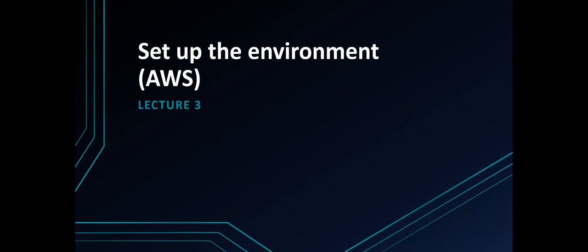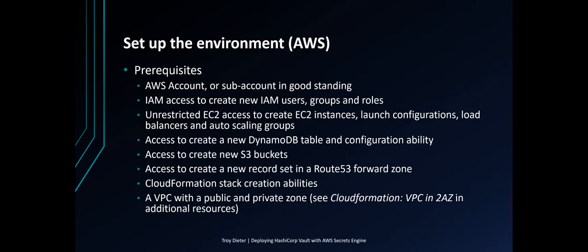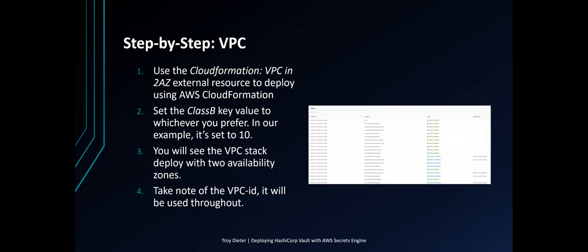Setting up the environment with AWS - Lecture 3. There are some prerequisites for this lecture, which include an AWS account or subaccount in good standing, Identity Access Management to create new IAM users, groups, and roles, unrestricted EC2 access to create EC2 instances, launch configurations, load balancers, and auto scaling groups, access to create a new DynamoDB table and global table if preferred, access to create new S3 buckets, and access to create a new record set in a Route 53 forward zone. CloudFormation stack create abilities, and a VPC with a public and private zone.